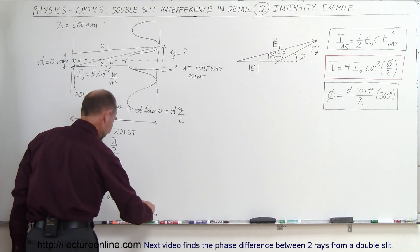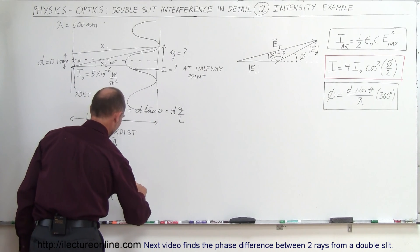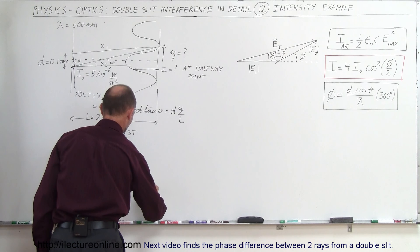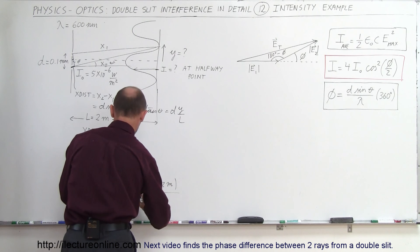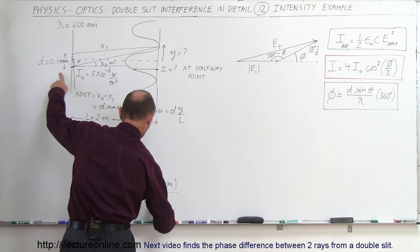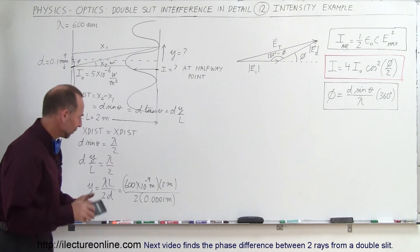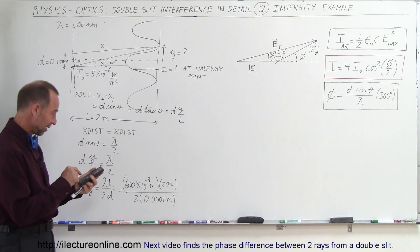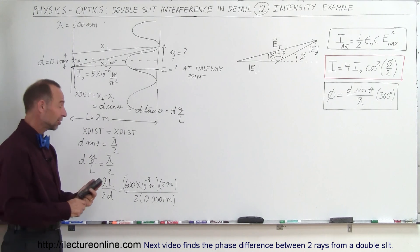Lambda is 600 nanometers, which is 600 times 10 to the minus 9 meters. l is 2 meters. And then we have 2 times d, which would be 0.0001 meter, which is a tenth of a millimeter. With the calculator: 600e-9 times 2 divided by 2 divided by 0.0001 equals 6 times 10 to the minus 3, which is 6 millimeters. So 6 millimeters is the distance from the central maximum to the first minimum.